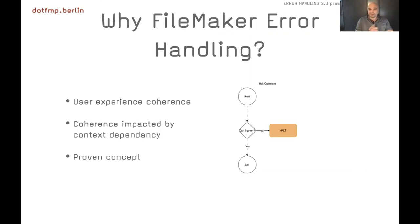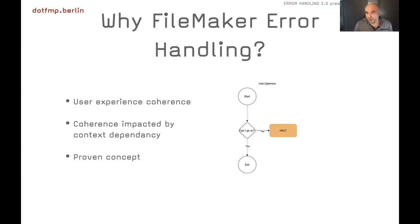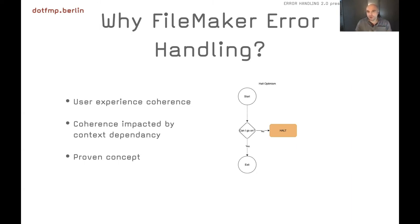Why implement error handling in FileMaker? Something I've seen in many projects is what I call 'whole optimism' — a script does some validation, can it go on? No — halt. That's clearly problematic. FileMaker's context-dependent nature forces us to often open internal windows outside the desktop area. If you just halt, you leave the user in an incoherent state, often with focus in a window outside their screen. They have no idea what to do and often have to kill FileMaker and start over.